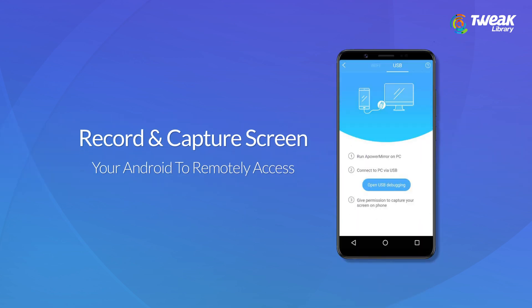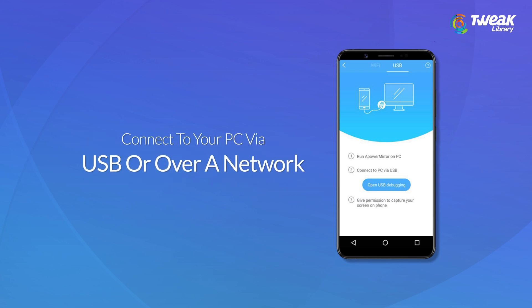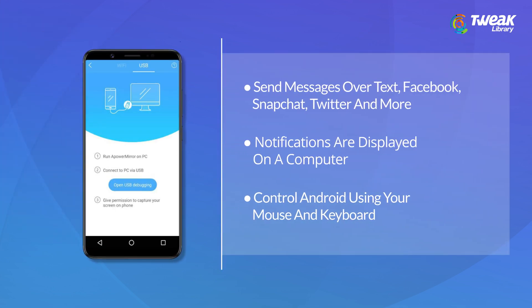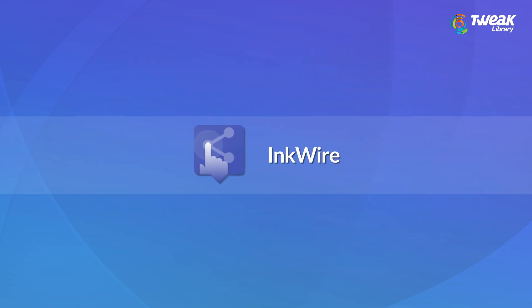Third app is ApowerMirror. Record and capture the screen of your Android to remotely access and control it via Windows or Mac computer. Connect to your PC over a network or USB. Send messages over text, Facebook, Snapchat, Twitter and more. Notifications are displayed on a computer. Control Android using your mouse and keyboard.